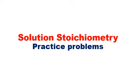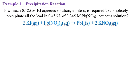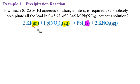In this video I'm going to talk about solution stoichiometry by reviewing some practice problems. First, I'm going to talk about a precipitation reaction. A precipitation reaction occurs when you add two solutions and make an insoluble solid — a precipitate. When we say solution stoichiometry, it means we have solutions in our reaction and we have information regarding those solutions.